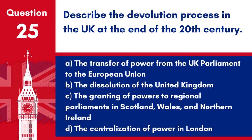Question 25: Describe the devolution process in the UK at the end of the 20th century. a. The transfer of power from the UK Parliament to the European Union. b. The dissolution of the United Kingdom. c. The granting of powers to regional parliaments in Scotland, Wales and Northern Ireland. d. The centralisation of power in London. Answer: c. The devolution process involved transferring certain legislative powers from the UK Parliament to newly established bodies in Scotland, Wales and Northern Ireland.